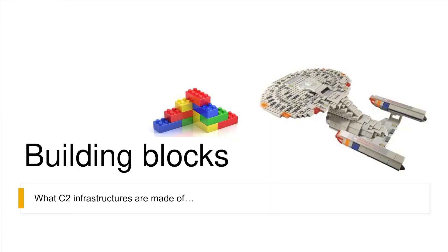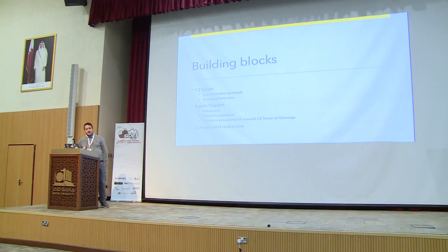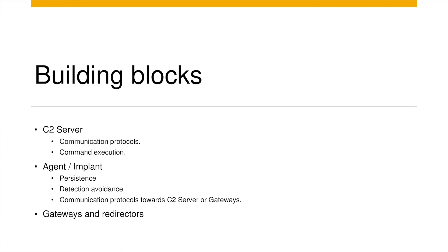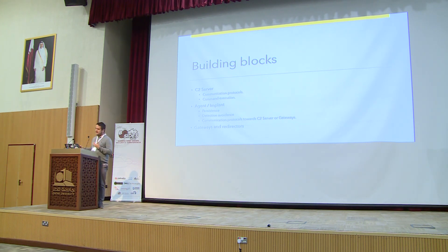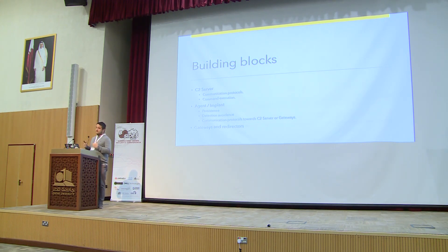So what are the building blocks of a command and control environment? You can see that basically it's a C2 server that has its own communication protocols. They execute commands on infected hosts and obtain data and results from these commands. Then we have the agents and the implants — these are running on your infected hosts and they have several modules from persistence to other capabilities. The most important one is to avoid detection and how they communicate towards the C2 environment.